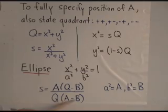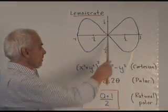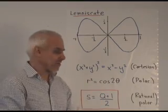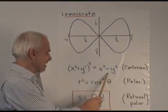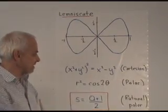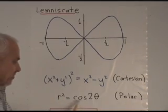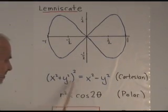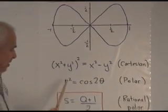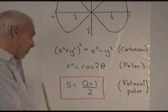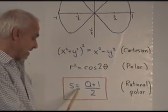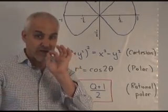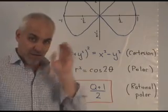The Lemniscate is a fascinating curve. It looks like a figure eight. And it's very important, both for historical purposes and its connection with elliptic functions. Its Cartesian equation is given by this, it's a quadratic curve of degree four in X and Y. And it turns out that its polar equation is relatively simple. It's R squared equals cosine two theta. It's again an easy exercise to just use the relations on the previous slide, to replace the X's and Y's with S's and Q, and get the rational polar form, which is even simpler: S equals Q plus one over two. This is a good indication that the rational polar coordinates are really hitting the nail on the head when it comes to understanding the Lemniscate.